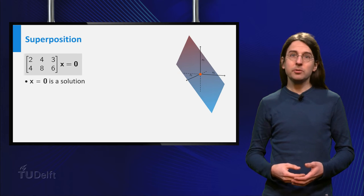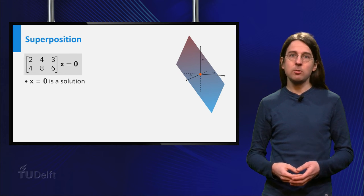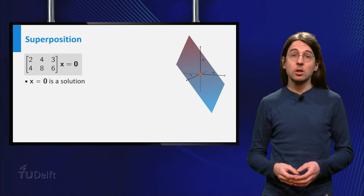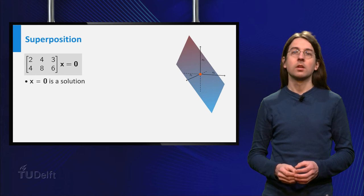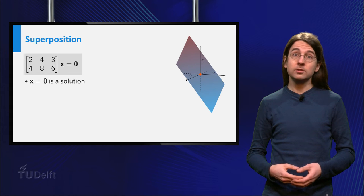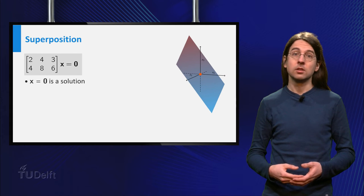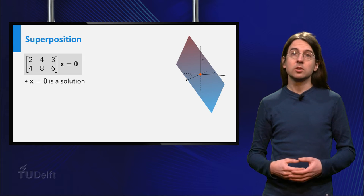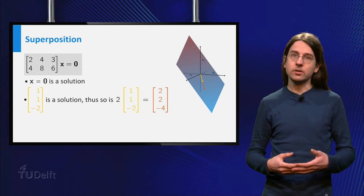An important property of sets of solutions to homogeneous equations is the concept of superposition. If you take a multiple of a solution you obtain a new solution. For example, twice the yellow vector is another solution.